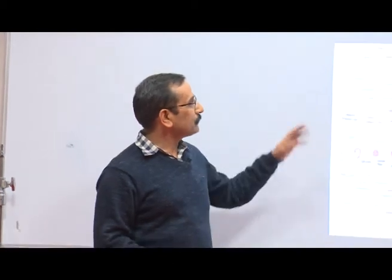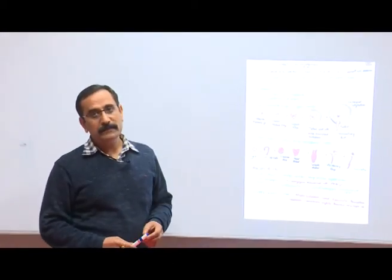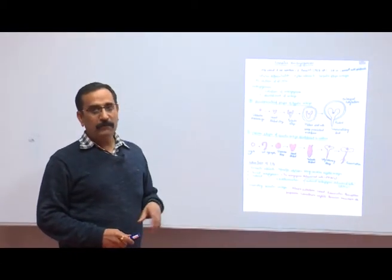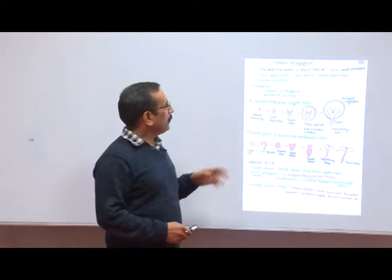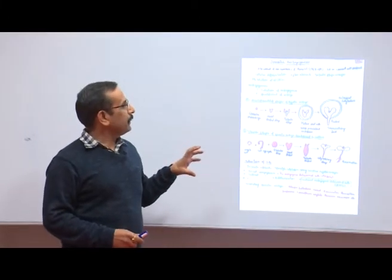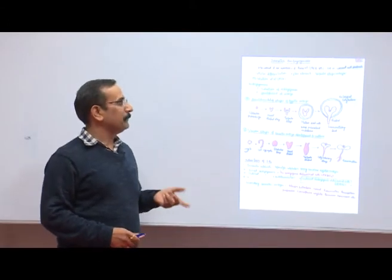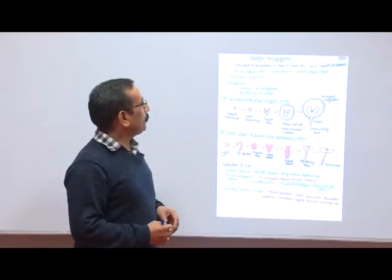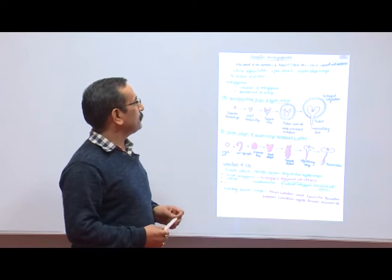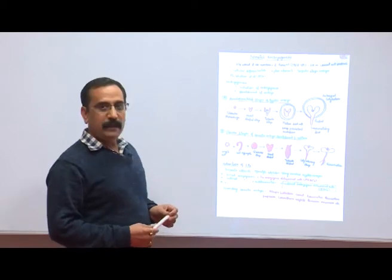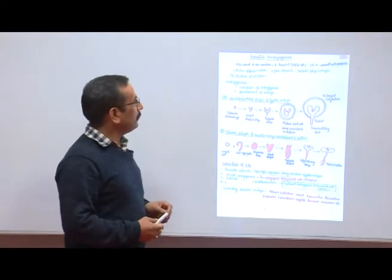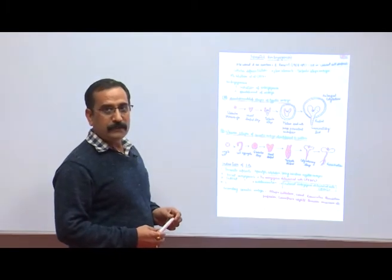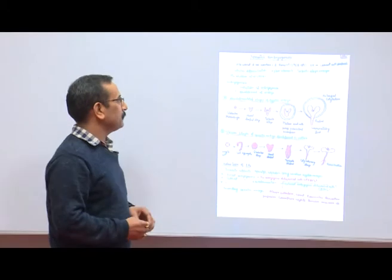Somatic embryogenesis — somatic embryos, somatic means the diploid embryos. We develop the embryo from somatic cells. The plant body has all somatic cells except the gametic cells. The first time somatic embryogenesis was reported by Steward 1958 in callus culture, and Dinard 1959 reported somatic embryogenesis in cell cultures or suspension culture.